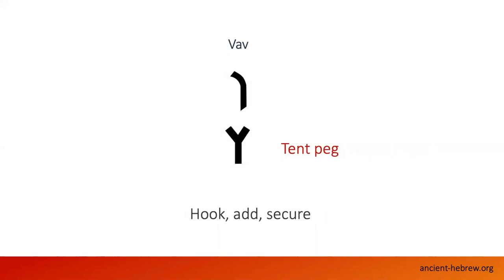And then we've got the Vav, the third one. That is like a tent peg or a huge nail. With a nail, you hook things up, add things, layer things together, and secure things. When you look at the picture, you can work out what the meaning is. It's straightforward to understand — child's play, as it were. And of course over time, the tent peg starts to look more like a character.